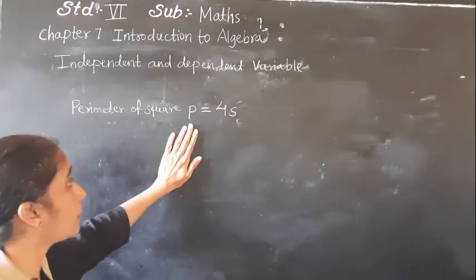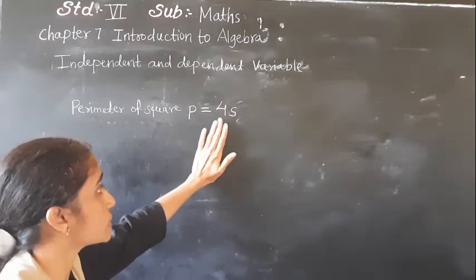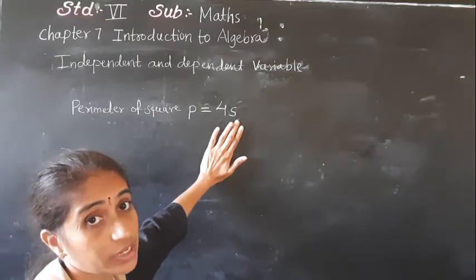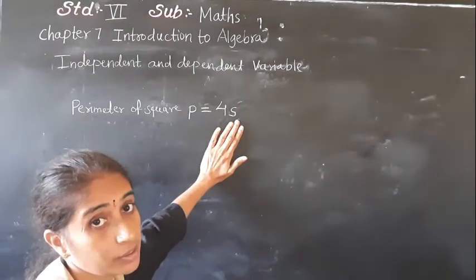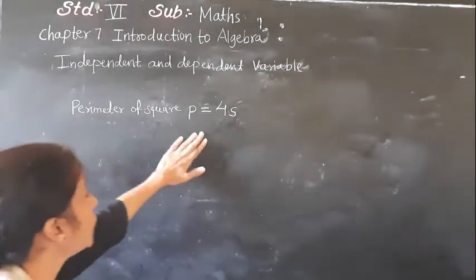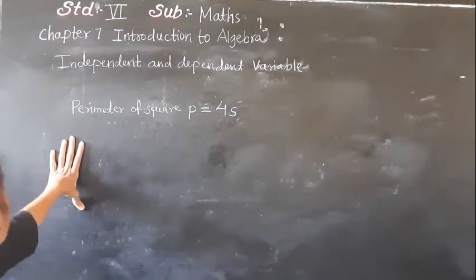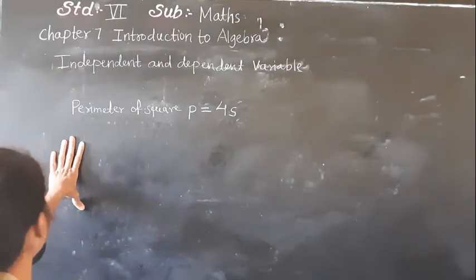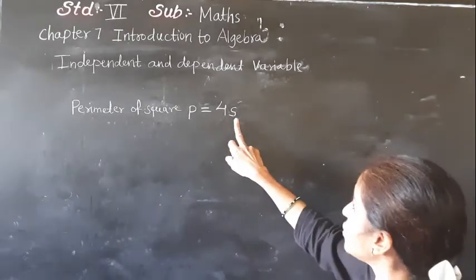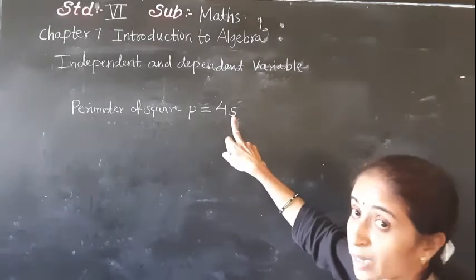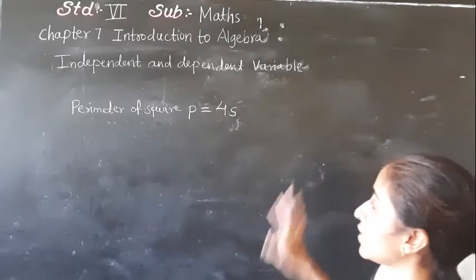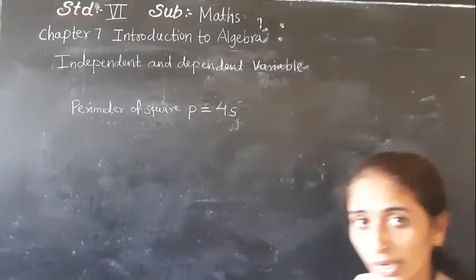For the perimeter of a square, P is equal to 4S, meaning 4 into side. Here the variable P is dependent, because the value of P is determined by S.